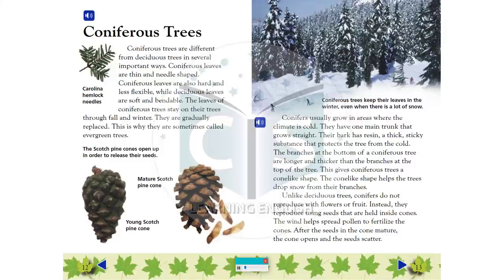Conifers usually grow in areas where the climate is cold. They have one main trunk that grows straight. Their bark has resin, a thick sticky substance that protects the tree from the cold. The branches at the bottom of a coniferous tree are longer and thicker than the branches at the top of the tree. This gives coniferous trees a cone-like shape. The cone-like shape helps the trees drop snow from their branches.